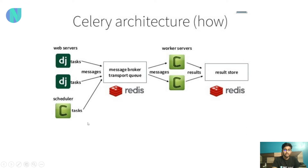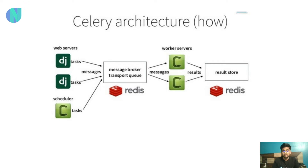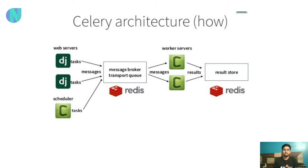What happens here is: first, a Django web server executes and with our Celery schedule a task is executed, and here we have the message broker. For the message broker in a Django application we can use RabbitMQ or Redis. We use Redis because it is easier in comparison to RabbitMQ, but you can also explore RabbitMQ. Redis works both as a cache memory and as a message broker.